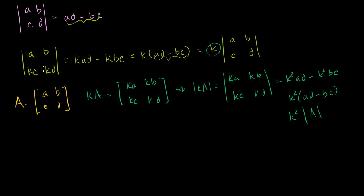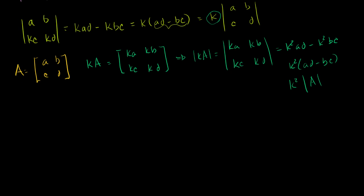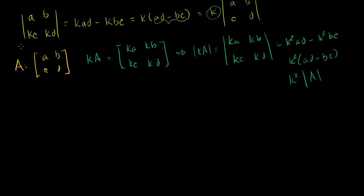The takeaway is: the only way you get a scalar multiple times your original determinant is if you multiply one row by that scalar, not the whole matrix. You might ask whether it matters which row I picked — it doesn't. I'll leave that for you to verify, but it does work for any row.